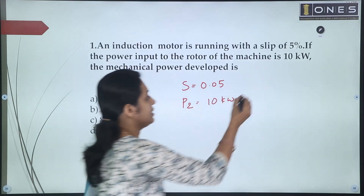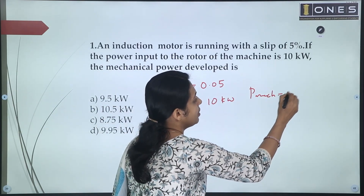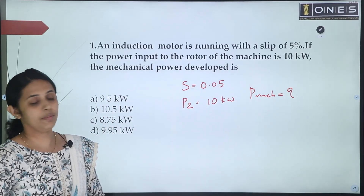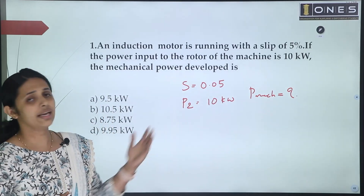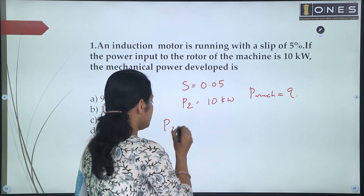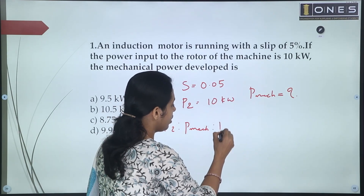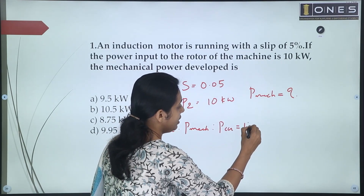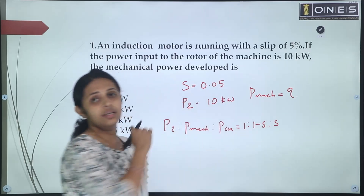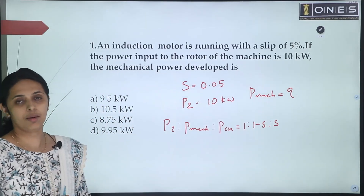What we need to calculate is the mechanical power developed. We will use the common relation: P2 : Pmec : Pc = 1 : (1 - S) : S.